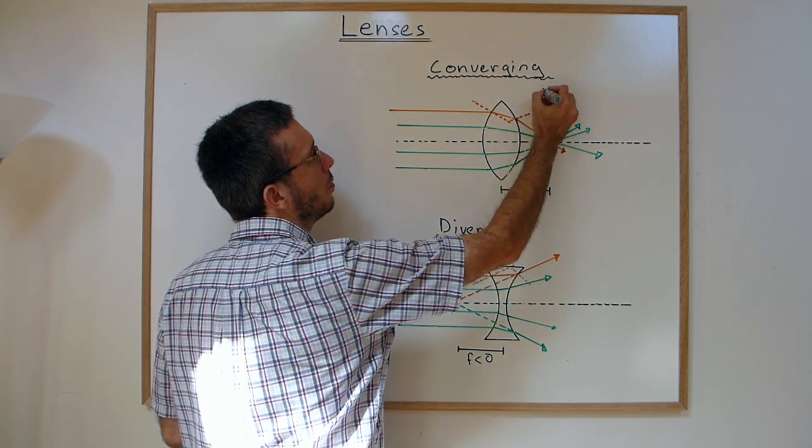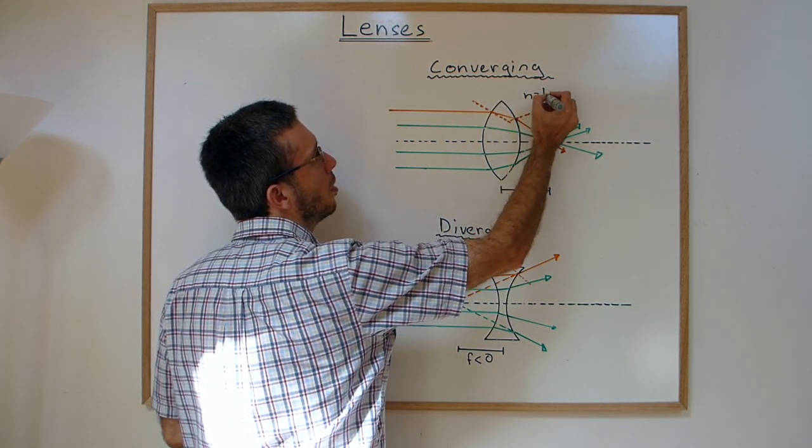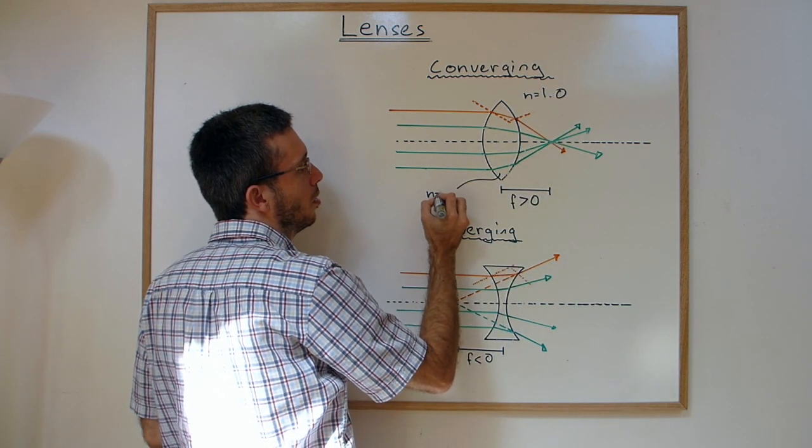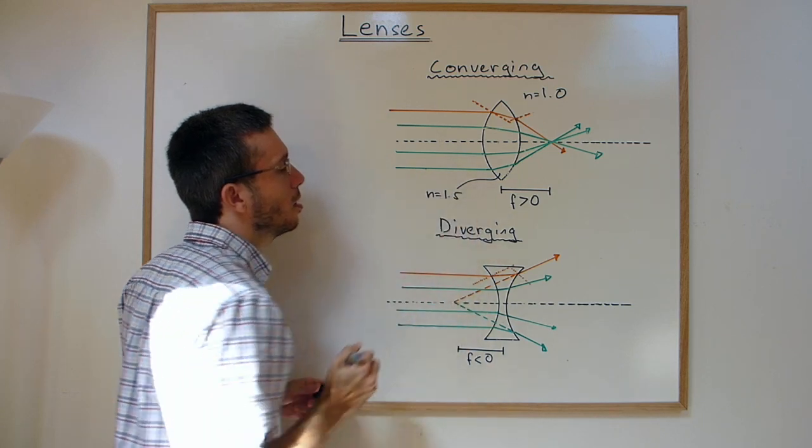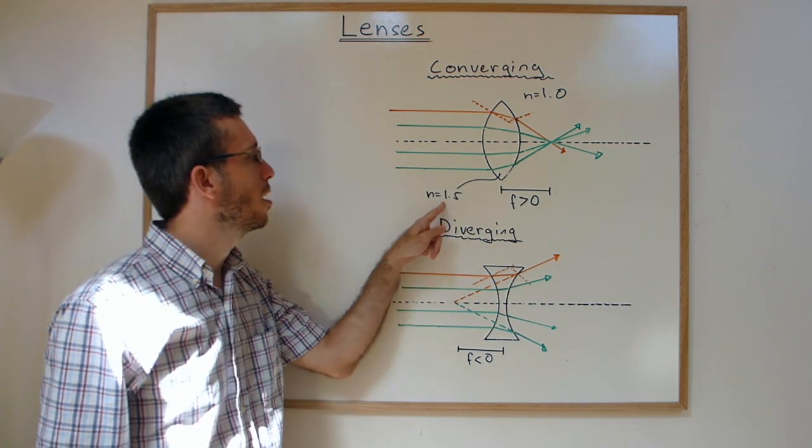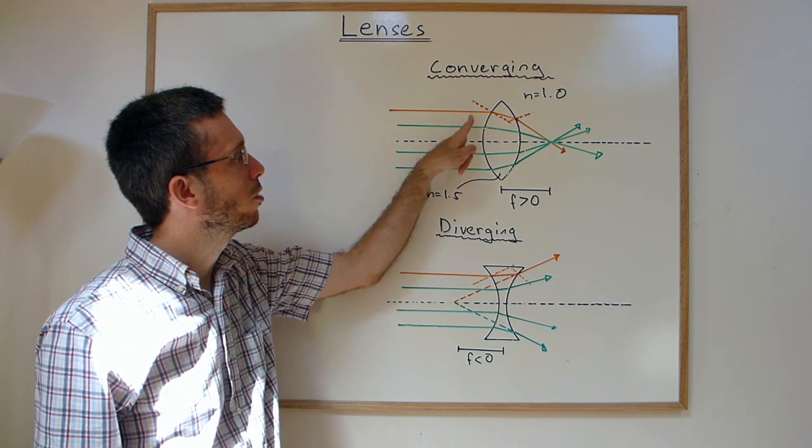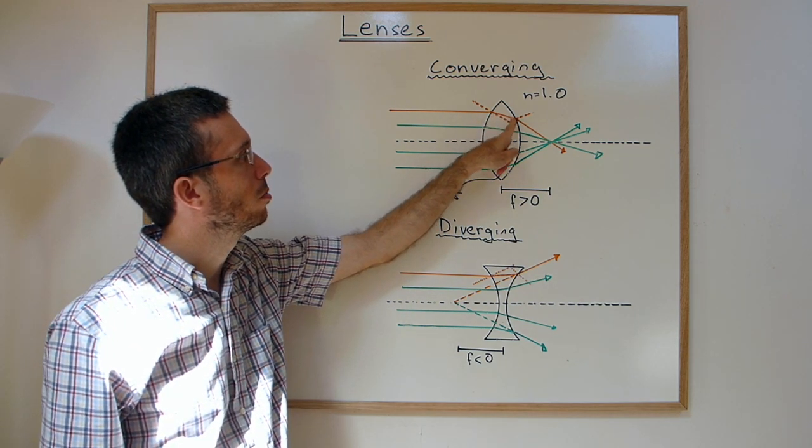Outside we have air with an index of refraction of 1, and inside the lens is typically made of glass with an index of refraction of 1.5. So we're going from a lower to a higher index, bending towards the normal.